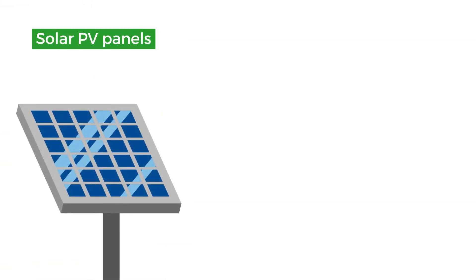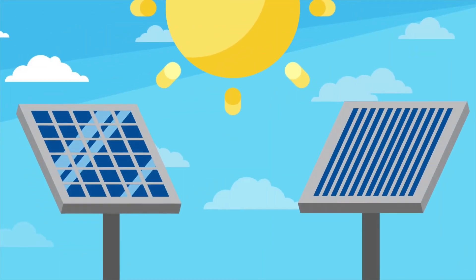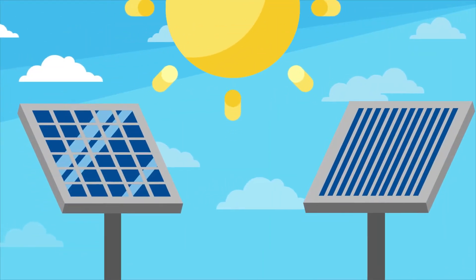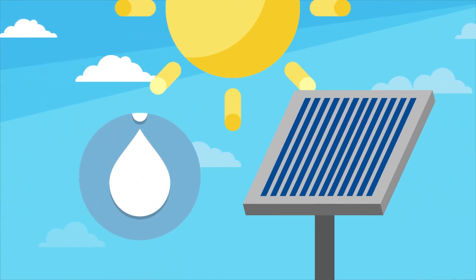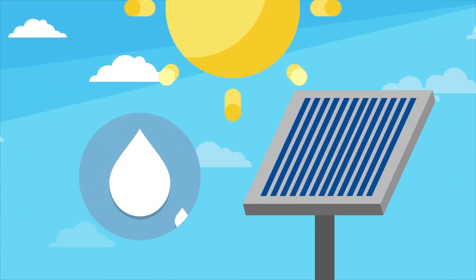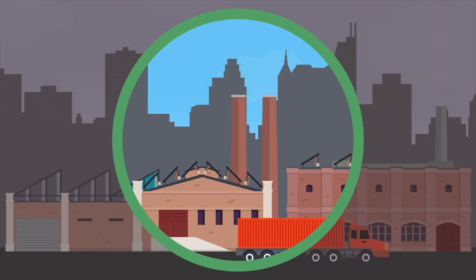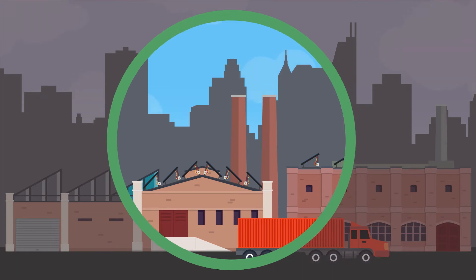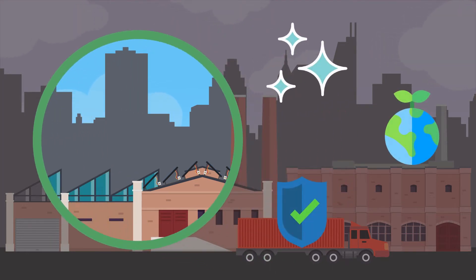Solar PV panels must not be confused with solar thermal collectors. Both technologies do harness energy from the sun. Solar PV generates electricity, and solar thermal is primarily used to heat water. Solar PV and solar thermal each have their place in the modern built environment, and they offer very cost-effective means of delivering clean, green and safe energy directly at the point of use.